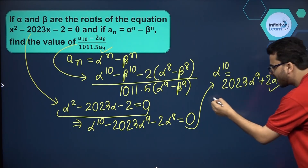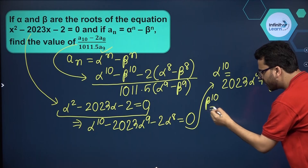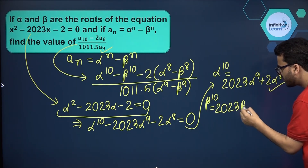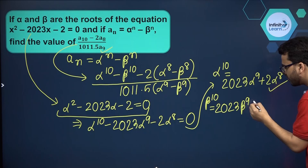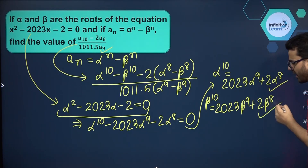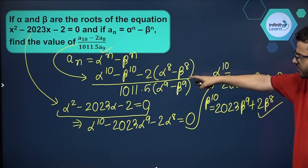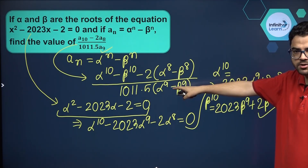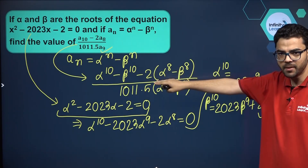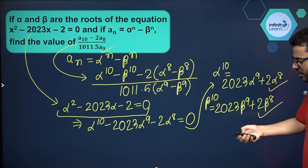In the same manner, since beta is also a root, beta raised to the power 10 will be equal to 2023 beta raised to the power 9 plus 2 times beta raised to the power 8. Now we have to find the value of this expression, so in place of alpha to the power 10 and beta to the power 10, we can substitute these results.